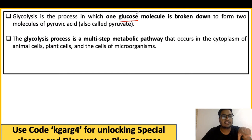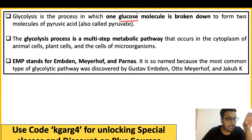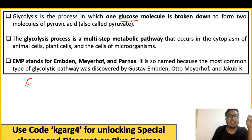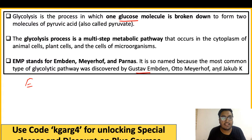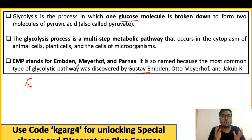Now, EMP — you should also know the full form of EMP, because if I am your examiner I can ask this. EMP stands for the names of the scientists who discovered the glycolytic pathway: E is for Embden (Gustav Embden), M is for Meyerhof (Otto Meyerhof), and P is for Parnas (Jacob Parnas). So EMP pathway stands for Embden-Meyerhof-Parnas.